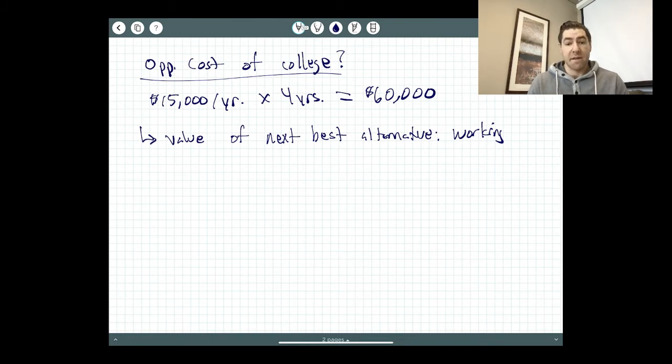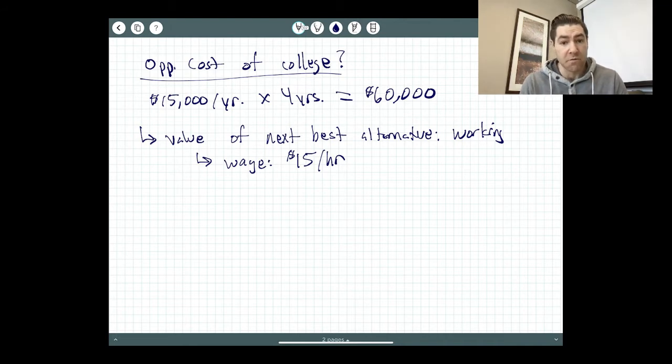So what's the value of my next best alternative? Best alternative is working. So the opportunity cost of college is the value of working. Now, what exactly is that? Well, we can do a simple calculation. So let's say that my wage is $15 per hour. So I can get a job that makes $15 per hour. I can go and work for Amazon, for example, be one of the delivery drivers, somewhere in the vicinity of $15 an hour. Now, if I work 40 hours a week, that's $600 per week.